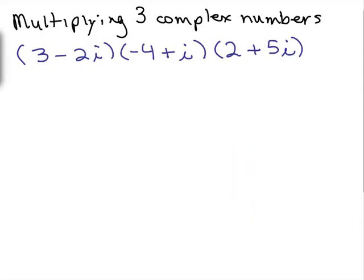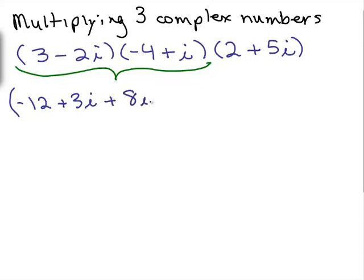We're going to use the same exact procedure here. So we're going to multiply these first two numbers together. And I'm going to put the answer in parentheses. You could do it on scratch but I'll show all the steps right here. 3 times negative 4, it's sort of like the FOIL method, right? 3 times negative 4 is negative 12. And then we have 3 times i which is plus 3i. And then the inner terms will be plus 8i. And then the last terms will be minus 2i squared. And don't forget to bring down the 2 plus 5i.